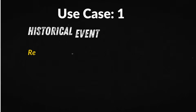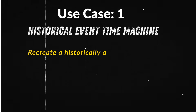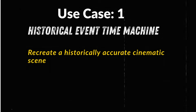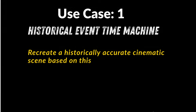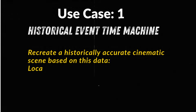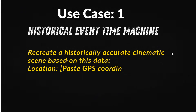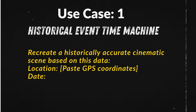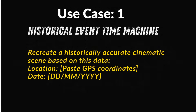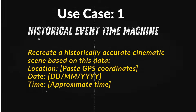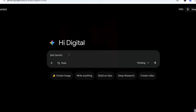Prompt 1: Historical Event Time Machine. Imagine this — you take only three things: a location, a date, and an approximate time. And Nano Banana Pro rebuilds a real historical moment as if a camera existed back then.